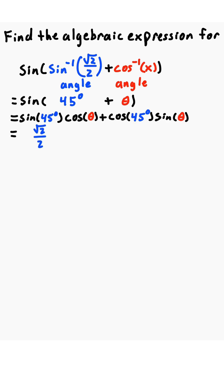We'll simplify what we can. Sine of 45 degrees is root 2 over 2, and cosine of 45 degrees is root 2 over 2.